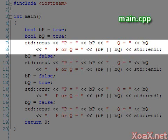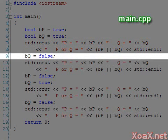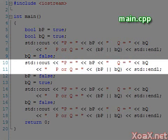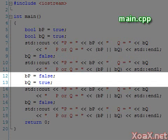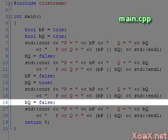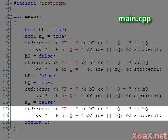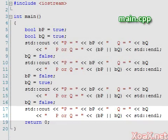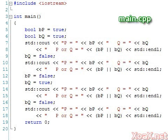After this, we assign q the value of false and output the values again. Then we assign p the value of false and q the value of true and output them again. Finally, we set q to false and output the values one last time. Altogether, this generates all four possible combinations of values for p and q.